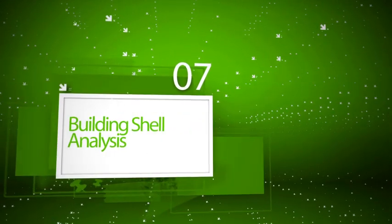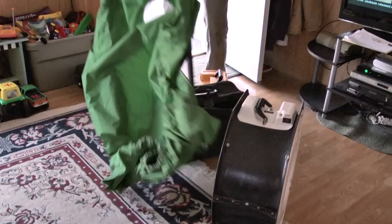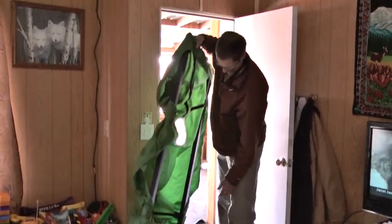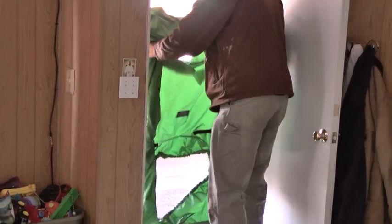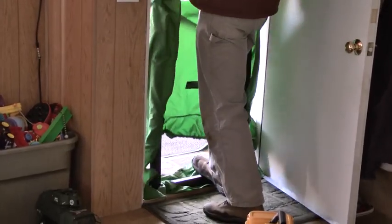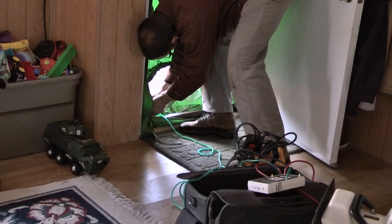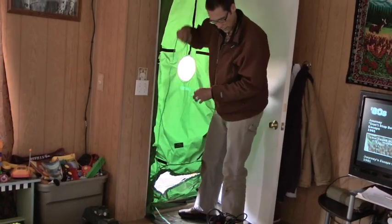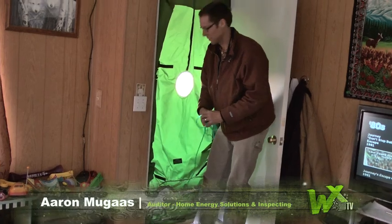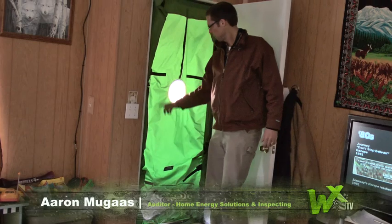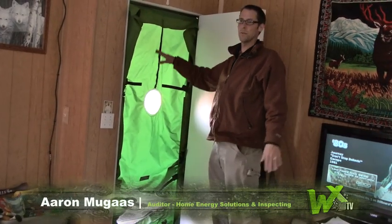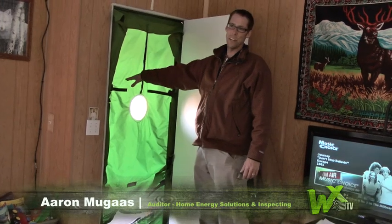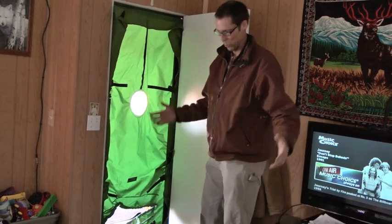The building shell analysis typically starts with a blower door test. Well, there's a green tube we put through here, which is going to tell us what the air pressure is outside. And then it'll compare it to inside. So we're blowing air out of the house, reducing the air pressure in here, which then air will come in through all the cracks and crevices.